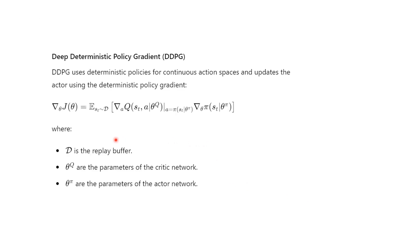Here we have the equation for the policy for continuous action space. We have theta, which represents estimates from the replay buffer. It takes experience and it's off-policy, so we take experience from the replay buffer. Here we have a Q parameter for the critic, and this part is for the actor.